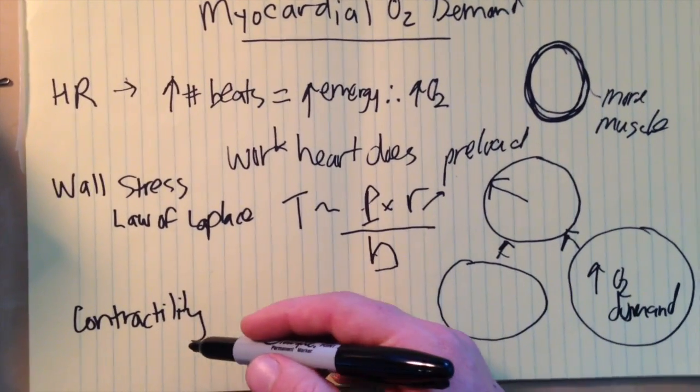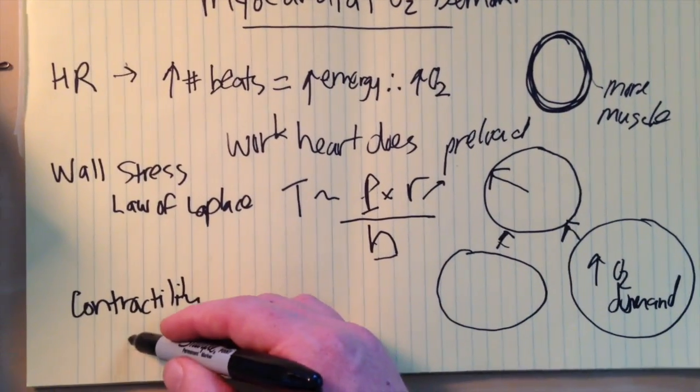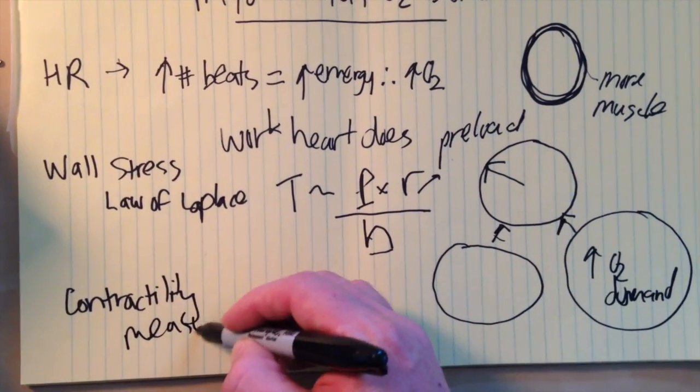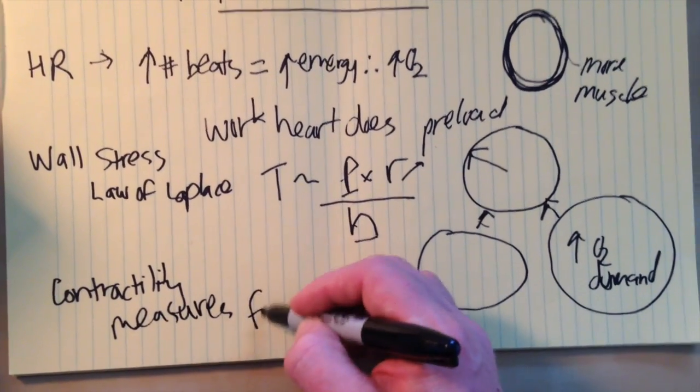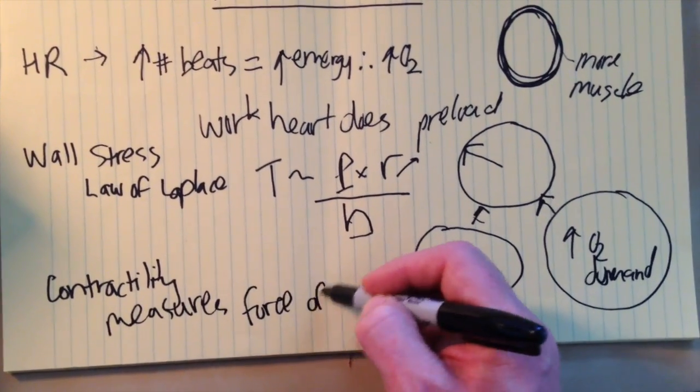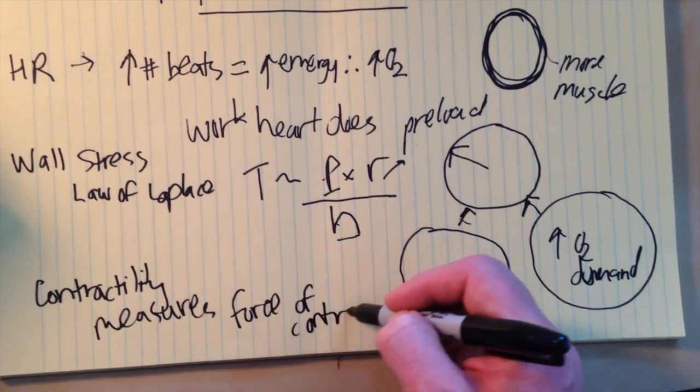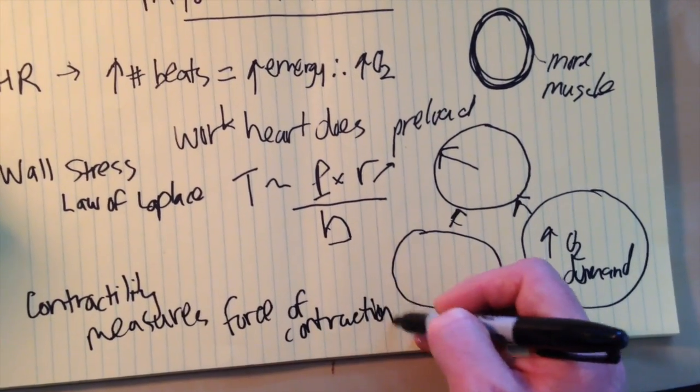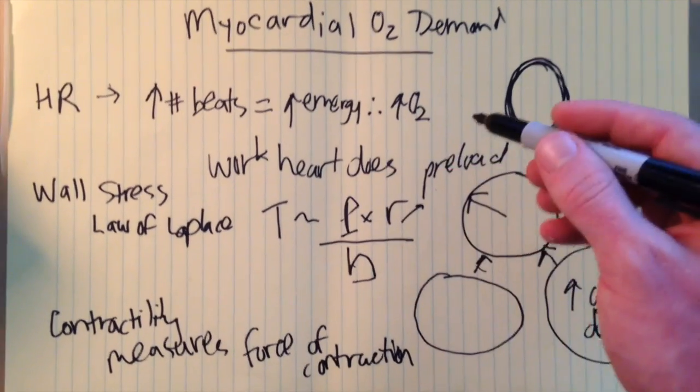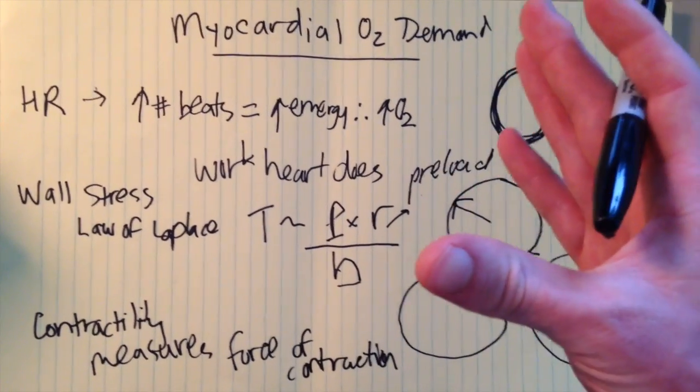The third factor is contractility, essentially a measure of the force of contraction, measures force of contraction, independent of the preload and afterload and all these other factors, essentially just how strong is that muscle contracting.